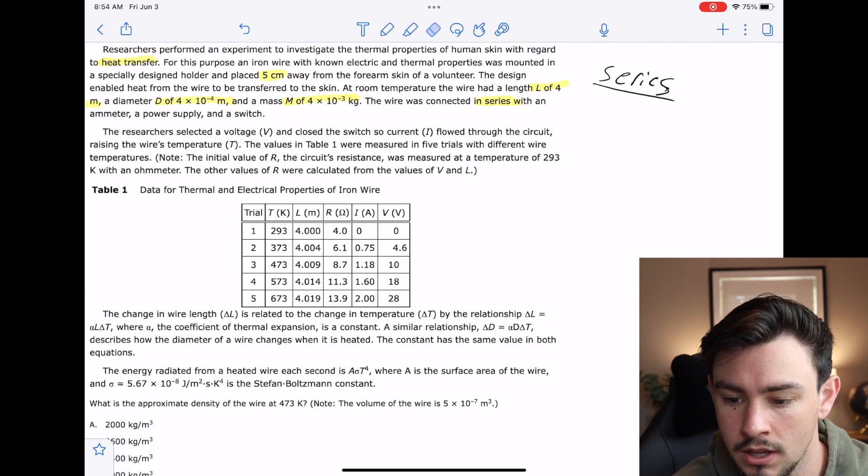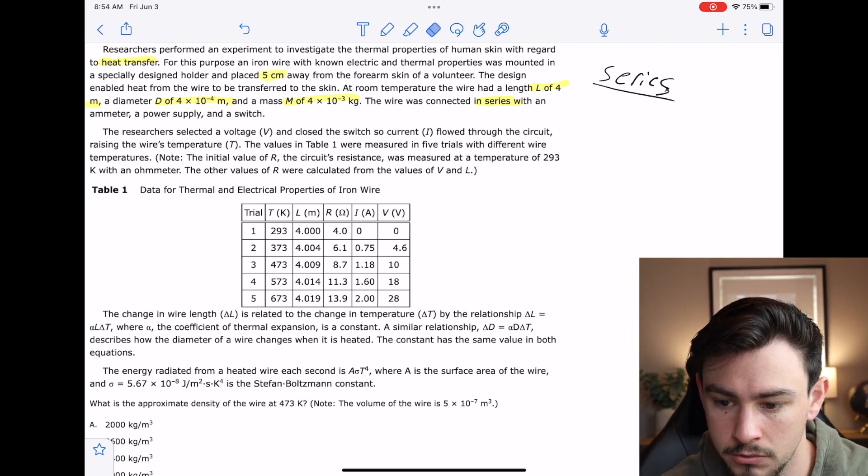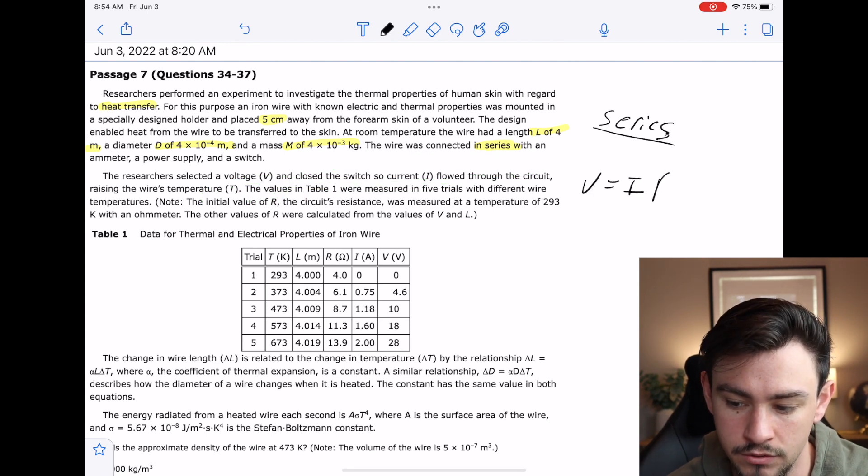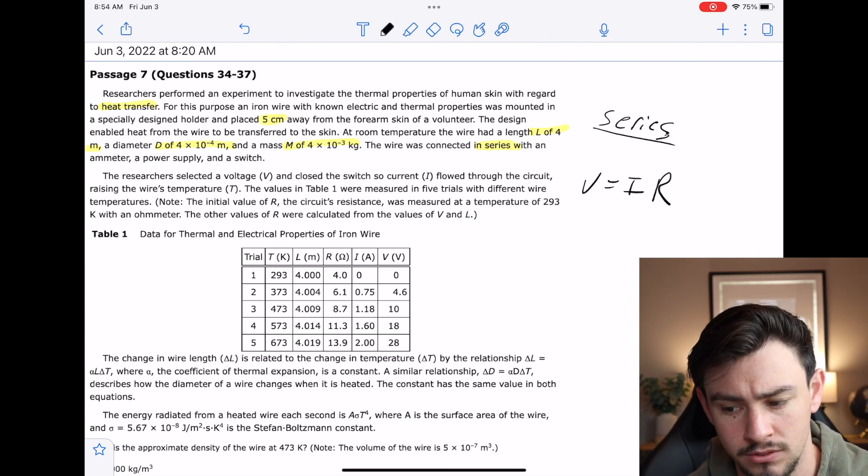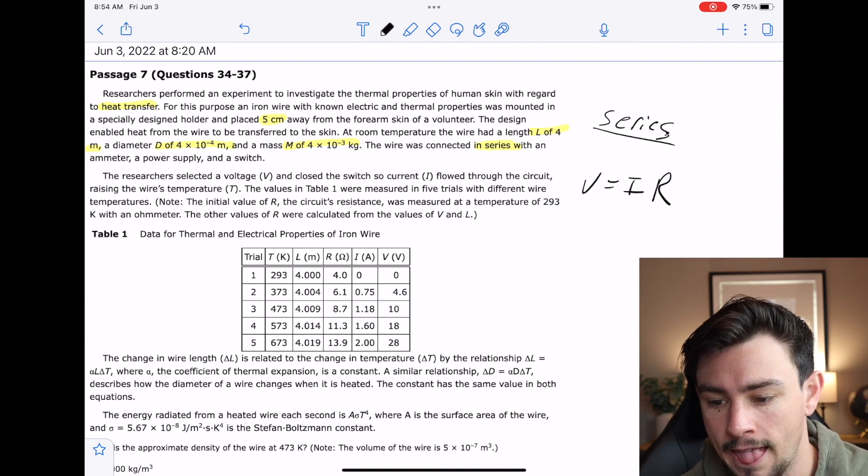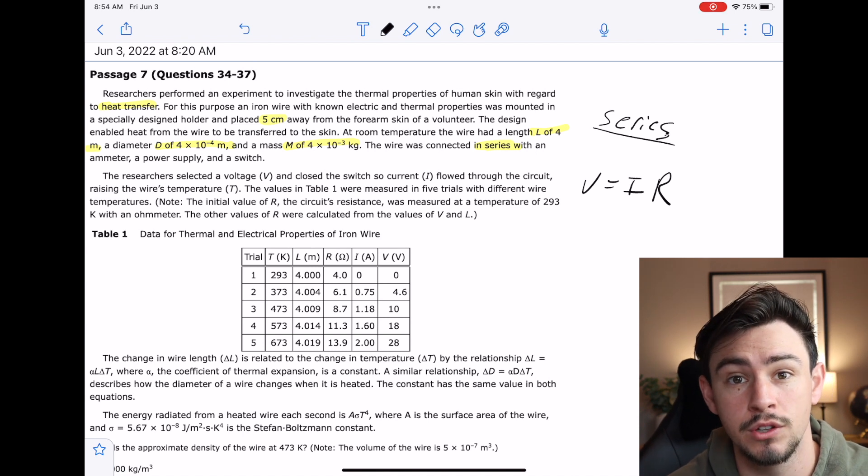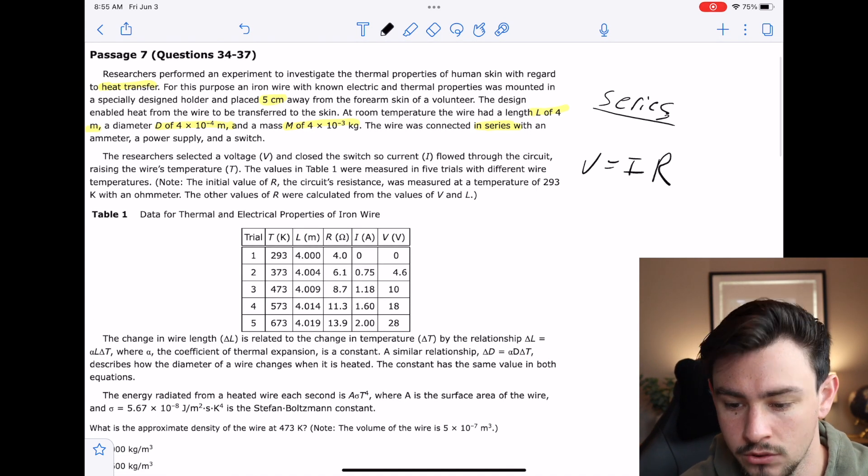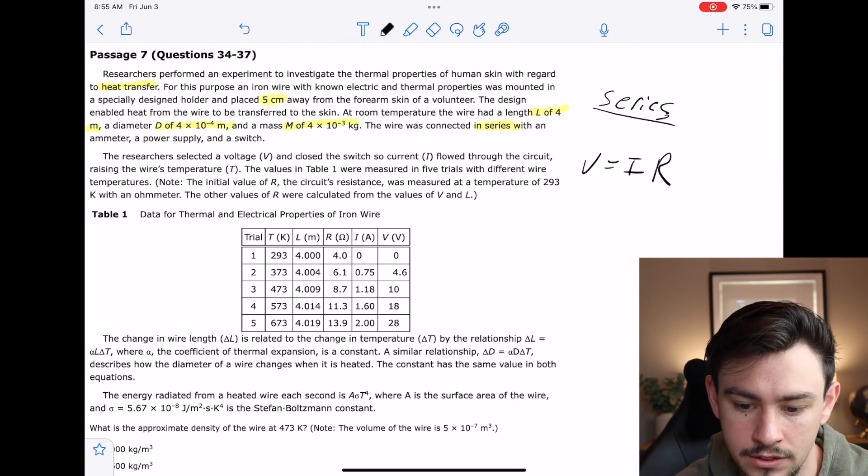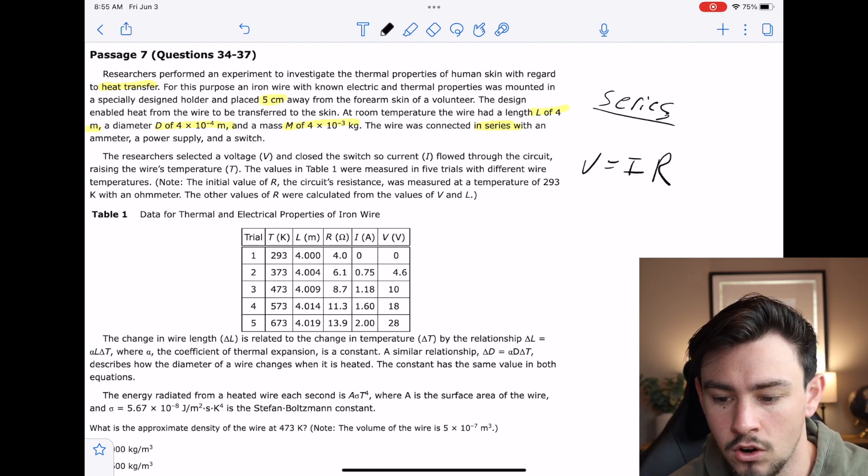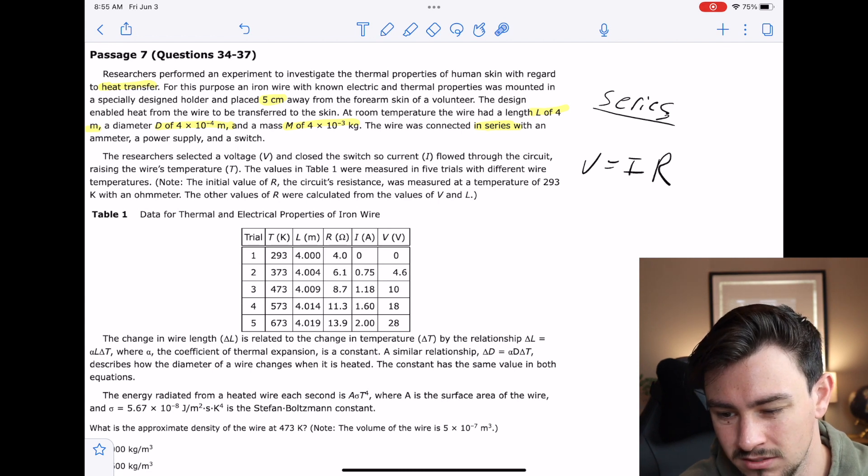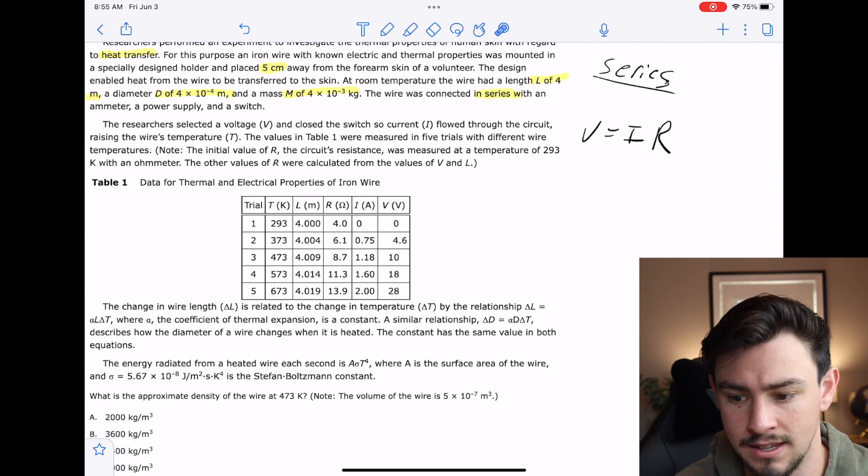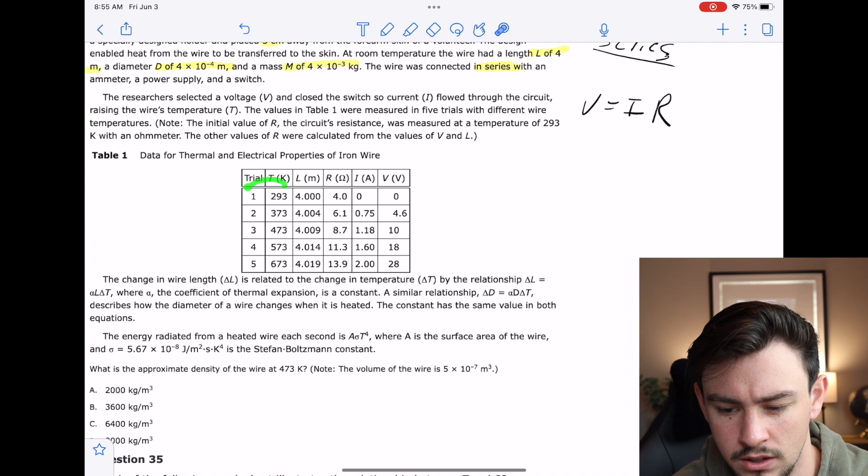The researchers selected a voltage and closed the circuit so current flowed through the circuit, raising the wire's temperature. Anytime I see something like voltage and current, if they're mentioning both of those, I am immediately thinking Ohm's Law, right? V equals IR because that just gets tested so frequently. It's one of the most high-yield physics sciences. The values in Table 1 were measured in five trials with different wire temps. Note the initial value of resistance - the circuit's resistance was measured at a temperature of 293 Kelvins with an ohmmeter. The other values of R were calculated from the values of V and I.